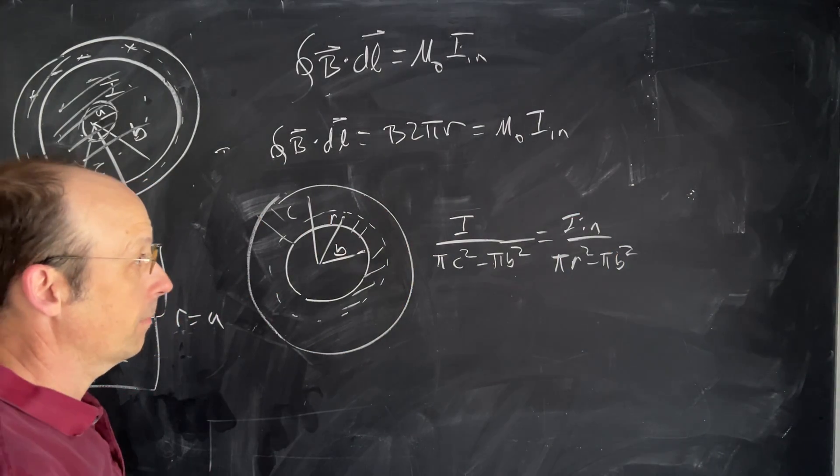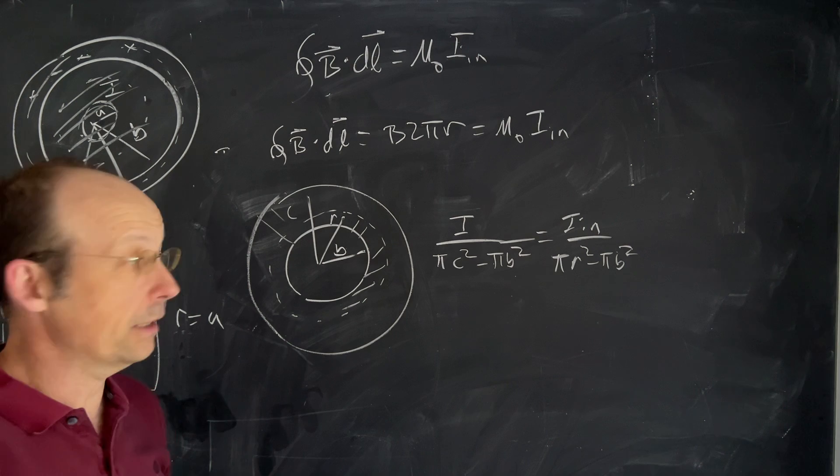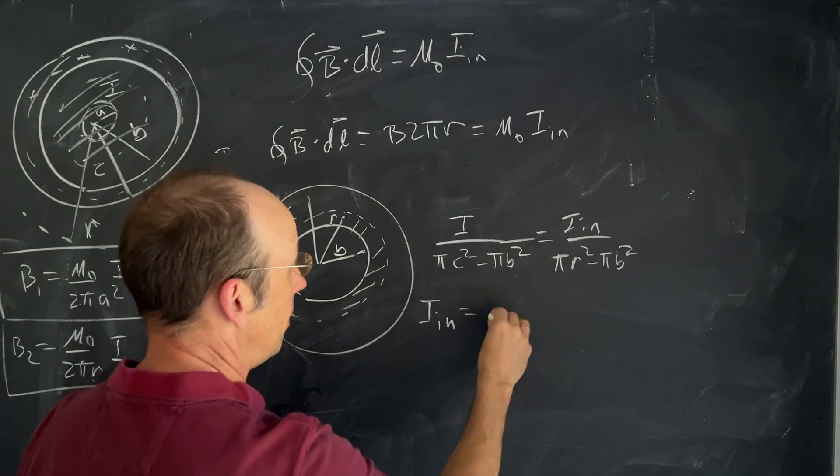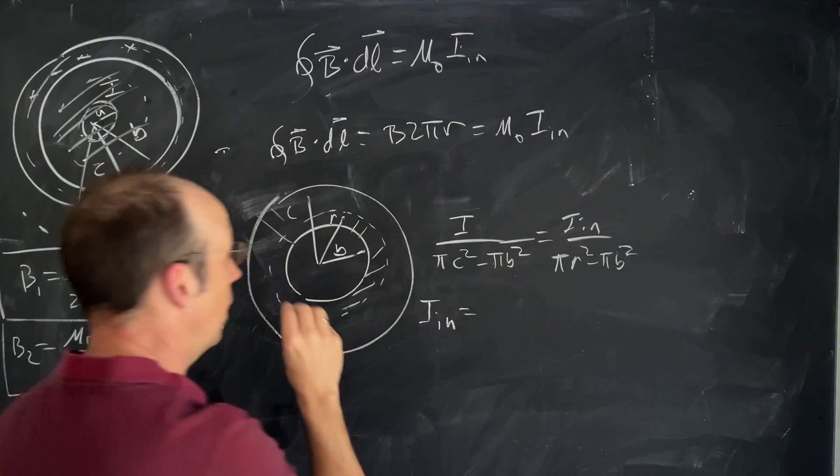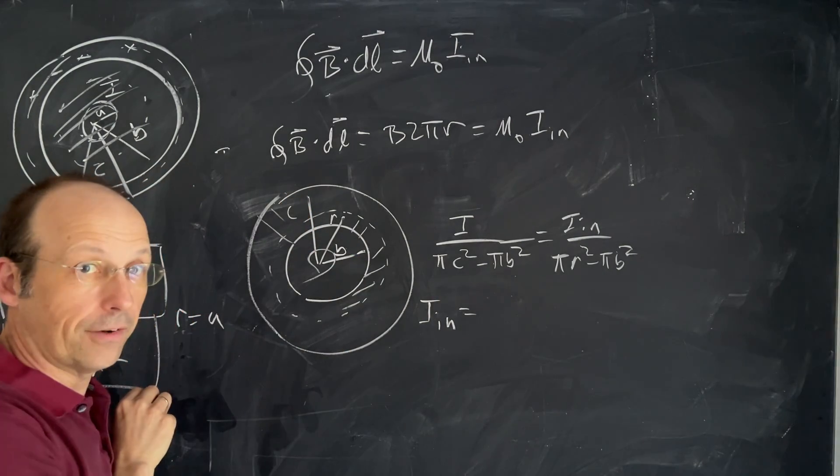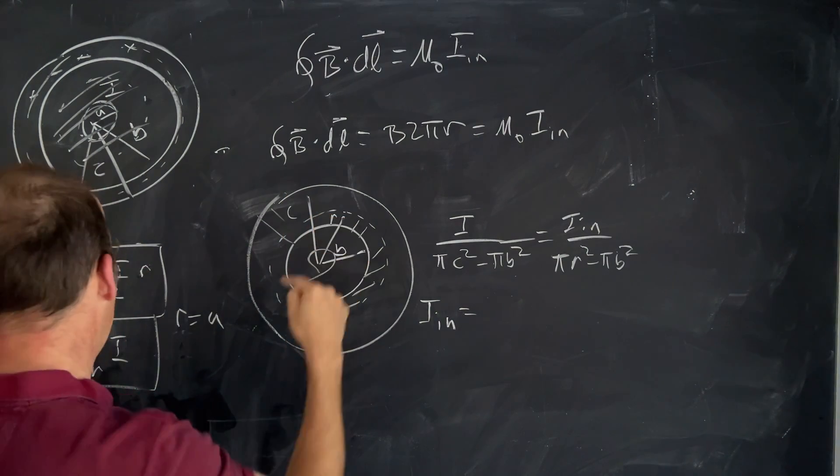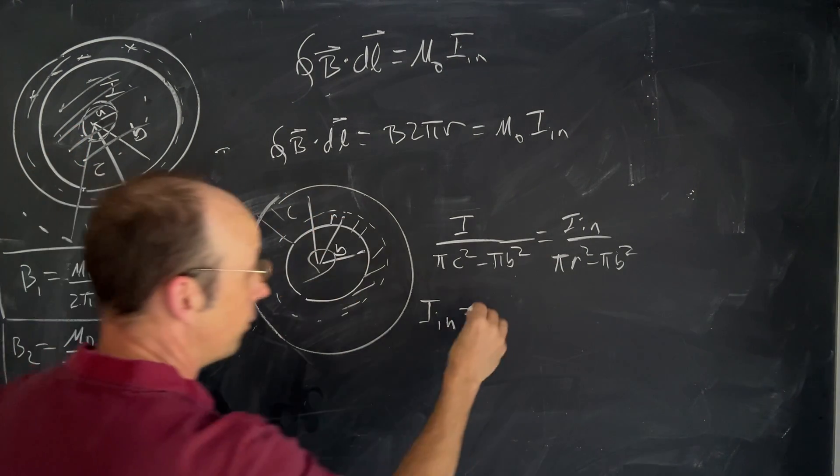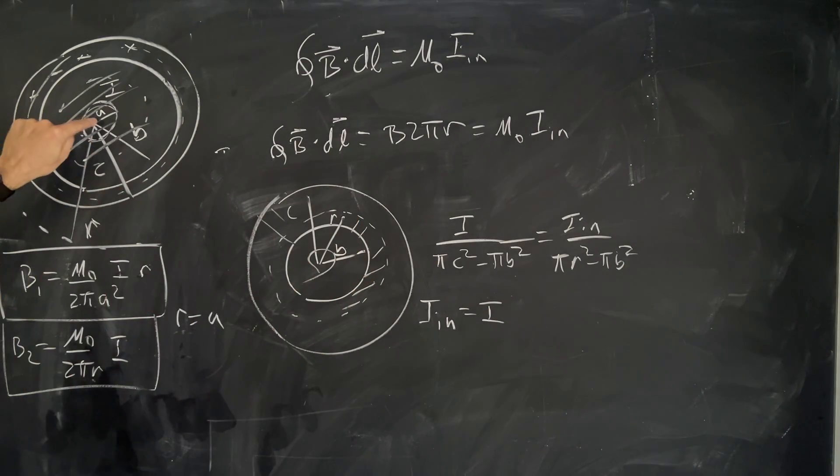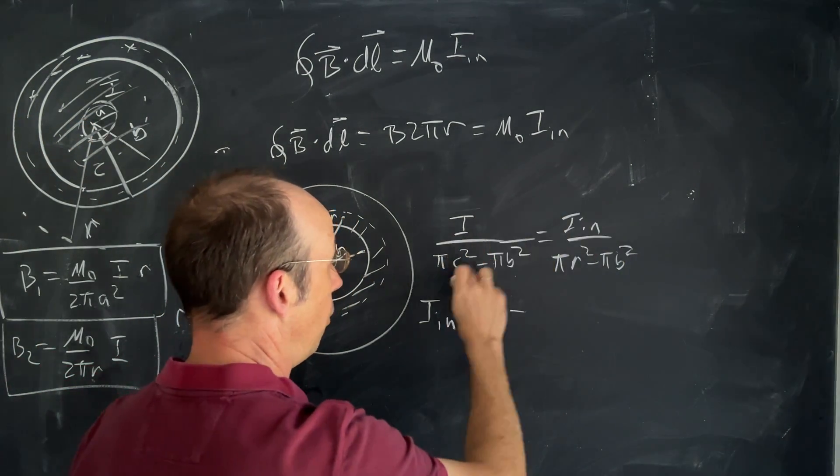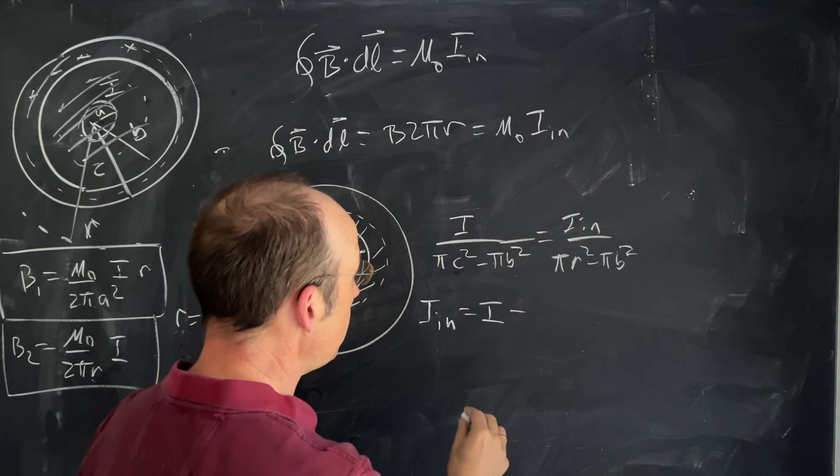And I want to solve for IN. First of all, all the π's cancel. That's good. So I get IN is going to be equal to... I have another I. This is actually going into the board. I'm going to call that negative. And I'm going to call this one out of the board. So it's I, right? Because I have to include the center wire too. Minus this. So I'm going to multiply by that.